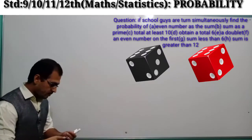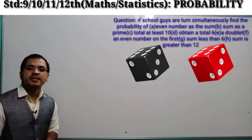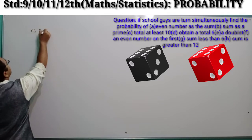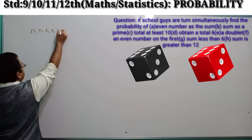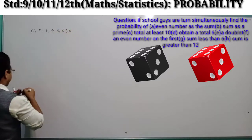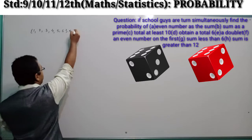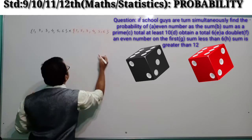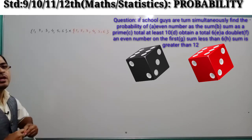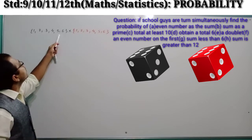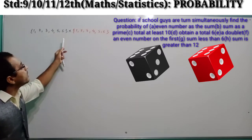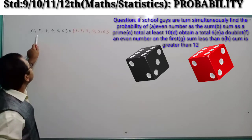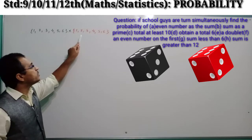Okay students, suppose you are having two different dice. One dice has the numbers 1, 2, 3, 4, 5, 6. Similarly, the second dice also has the numbers 1, 2, 3, 4, 5, and 6. Now, if one die has 6 outcomes and another die has 6 outcomes, and these two dice are thrown simultaneously, the number of total events is 6 into 6, which is 36.